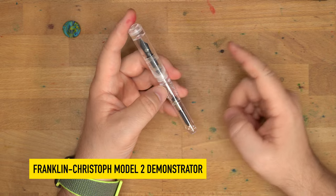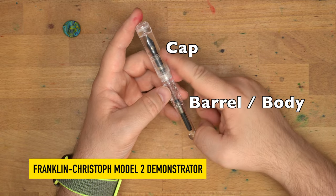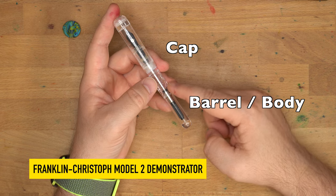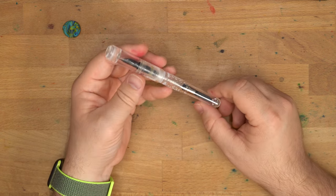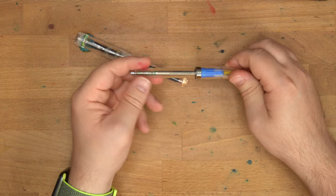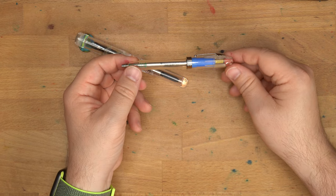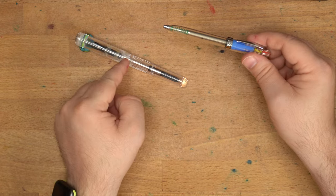That means that it has a translucent or transparent cap and or barrel. This is the cap of a pen. This is the barrel or the body of a pen. So they were called demonstrators because back in the day you would take them around to shops, and you would be able to show the shop owner or customers what's going on inside of a pen, because sometimes they're more complicated than this.